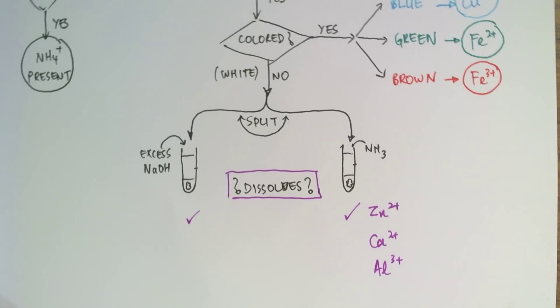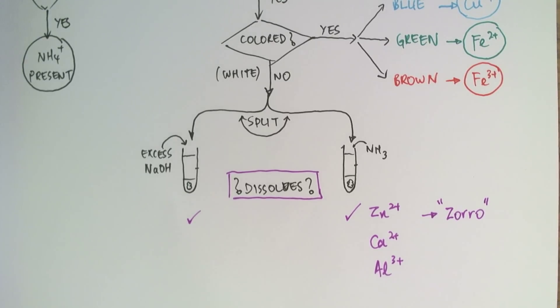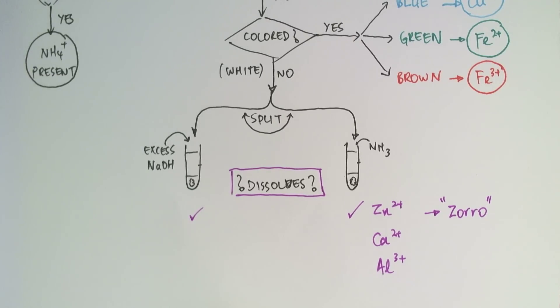Now, one way I like to remember that is Zorro starts with a Z and he's really hard to catch, you know, he disappears very easily. So that's kind of a mnemonic I like to use to indicate the easy disappearance of the white precipitate in the presence of excess sodium hydroxide and ammonia.